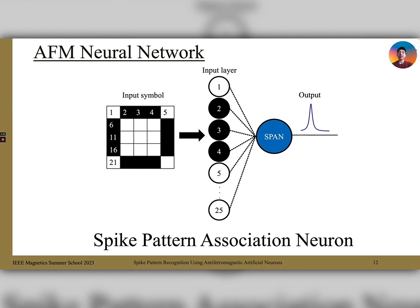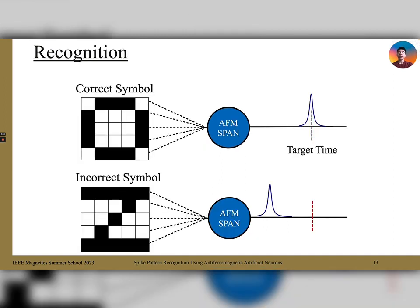We make use of a system called Spike Pattern Association Neuron, or SPAN. The patterns were made from a 5x5 grid where each cell corresponds to an input neuron that will fire if the pixel is black. The input neurons are directly connected to a single output neuron via trainable weights. Our goal is to create a neural network that will be able to recognize symbols made from this grid. When the correct symbol is supplied, the output neuron will spike at a desired time. And when the incorrect symbol is inputted, the output neuron will spike away from the target time. We achieve this goal through training the output weights.